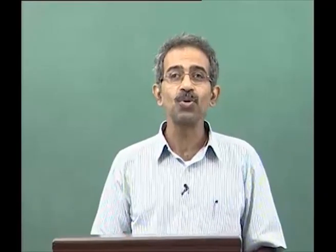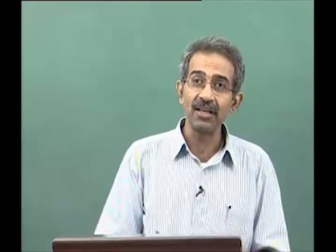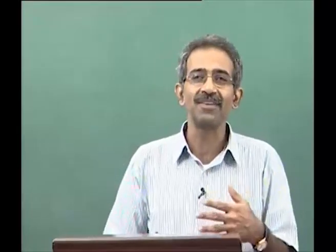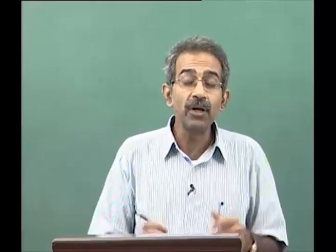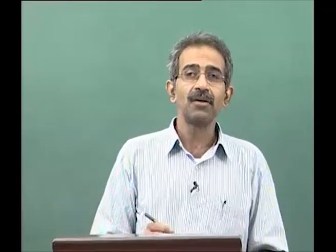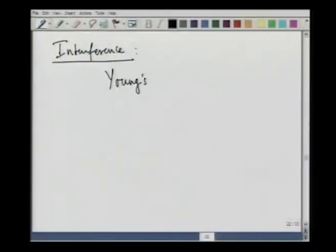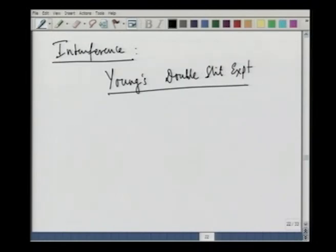We do not have the luxury of time to discuss interference in all possible aspects. What I will do is look at the famous prototype experiment — the famous Young's double slit experiment — illustrate the principles, then give examples of interferometers such as Michelson's stellar interferometer and Michelson interferometer as reading assignments. Then I will describe some very remarkable experiments involving interference connected with quantum mechanics, which give rise to counter-intuitive conclusions that led to the development of quantum mechanics. Let us start looking at the Young's double slit experiment.